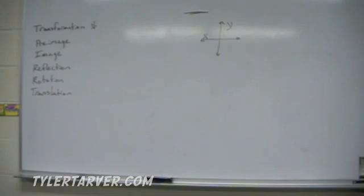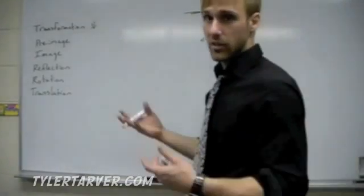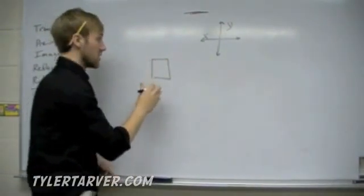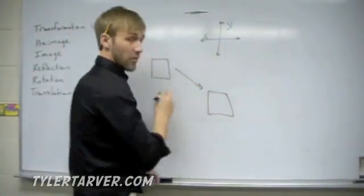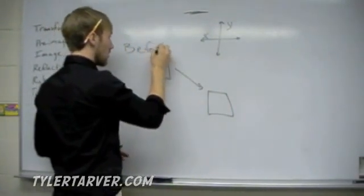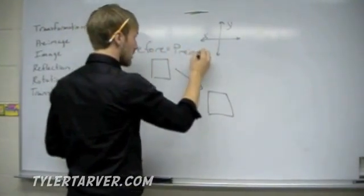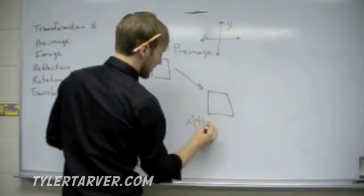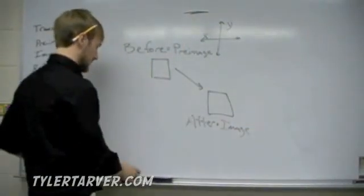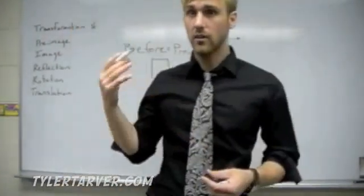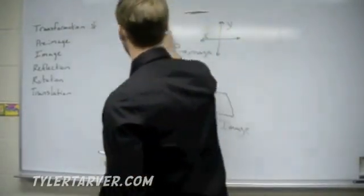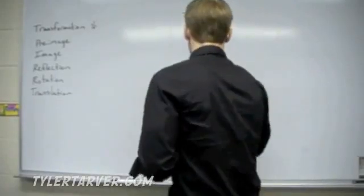The second thing is called a pre-image. 'Pre' means before, so the pre-image is the shape where it starts out. If I slide it down, the result is called the image. The image happens after. So: before equals pre-image, and after — whatever happens afterwards — is just the image.